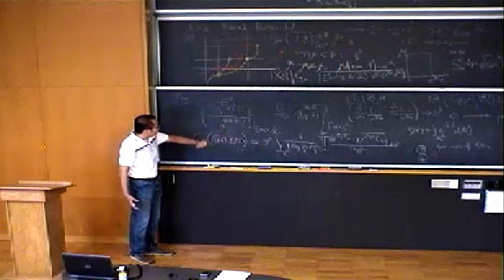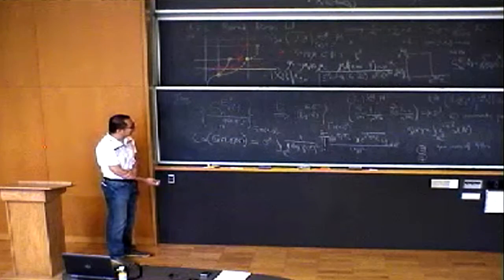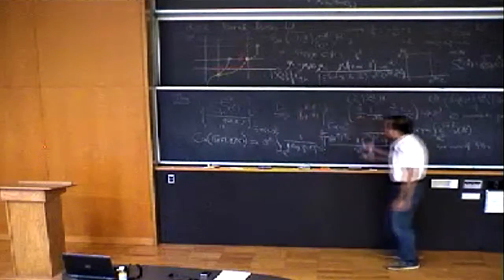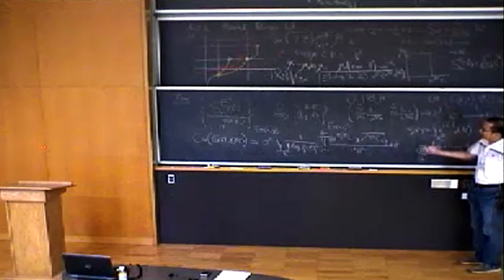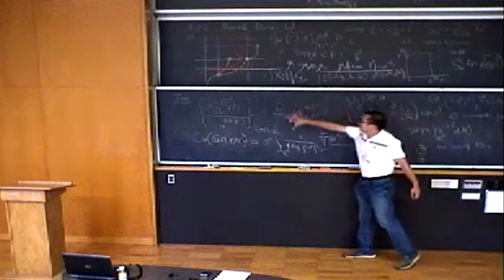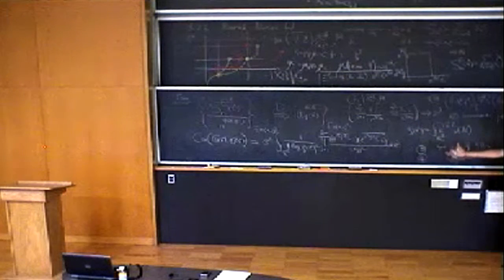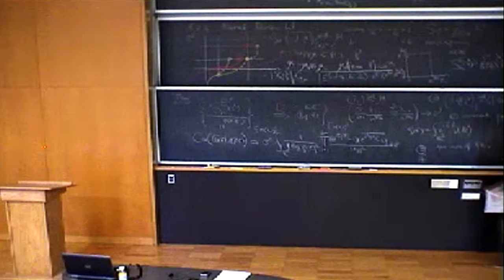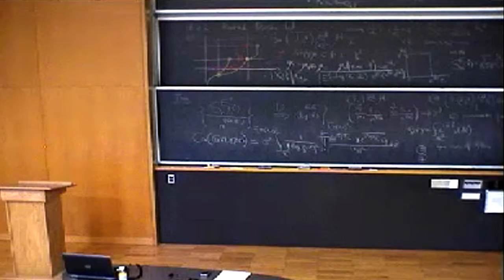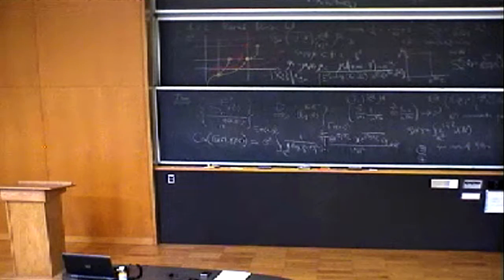Another highlight is that in terms of the proof, we found a unified approach to treat all possible cases in one proof. At the beginning we proved the case for E prime equals E and then for some specific E prime. Then we realized the proof can be generalized. That's the comment on our result.